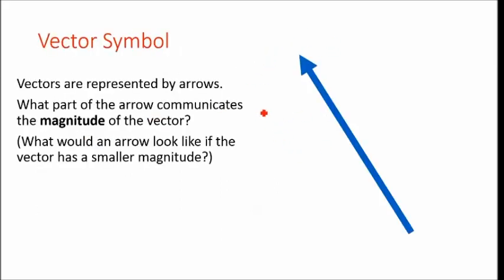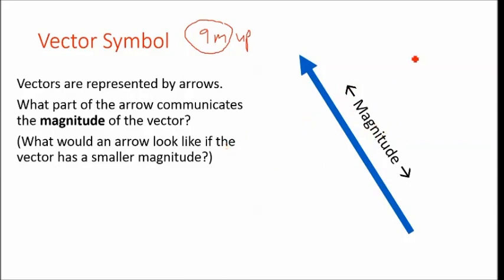To draw a vector on paper, you can draw an arrow. This arrow has a direction and a length, and we call the length the magnitude. Like if we had nine meters up, the nine meters would be the magnitude part. If you had a smaller magnitude, you'd draw a smaller arrow. This represents a smaller magnitude vector.